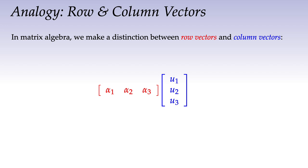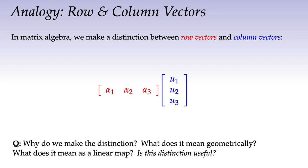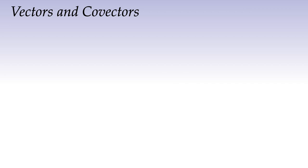We can also interpret this geometrically by thinking of the row vector as a linear map that sends the column vector to a real value. So the key idea is that a co-vector is going to measure the length of a vector along a particular direction. Because there's this functional relationship — the co-vector takes a vector as input and produces a length as output — we write it in functional notation: α(u). We really think of α as a function operating on vectors.